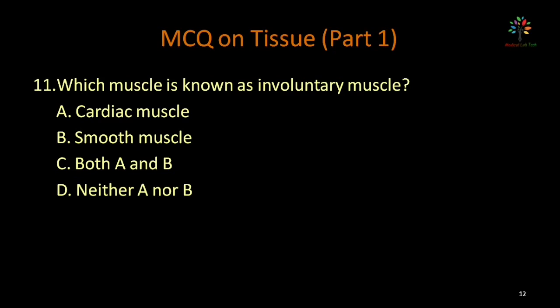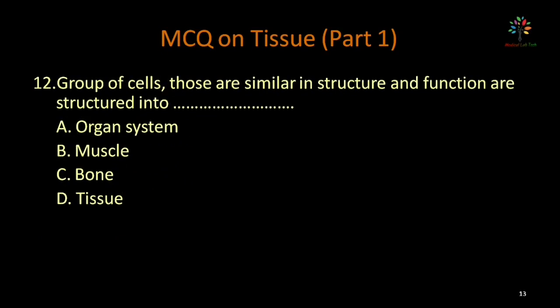Which muscle is known as involuntary muscle? Options: cardiac muscle, smooth muscle, both A and B, neither A nor B. There are three types of muscles: skeletal, cardiac, and smooth. Skeletal muscle is voluntary. Cardiac and smooth muscles are involuntary — you cannot control their movement. Correct option is both A and B.